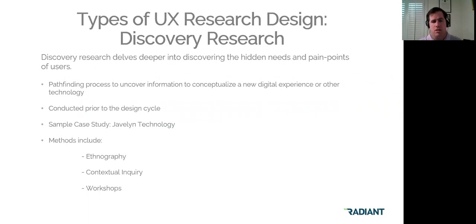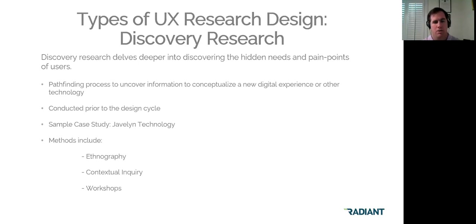I'd like to transition into talking about the types of research design used in UX research. There's discovery research, exploratory or formative research, and evaluative or summative research. Discovery research's purpose is to delve deeper into discovering hidden needs and pain points of users — a pathfinding process for uncovering information. The purpose is to conceptualize a new digital experience or technology, discovering what is needed and using those insights to formulate ideas for a new app, software, or other experience. It's conducted prior to the design cycle.